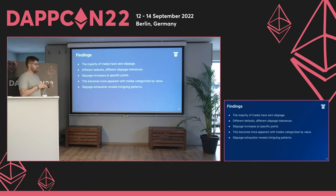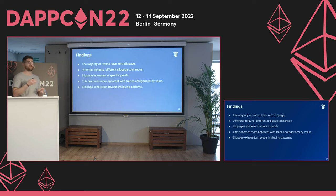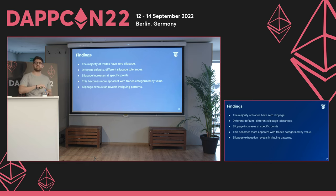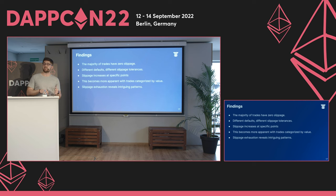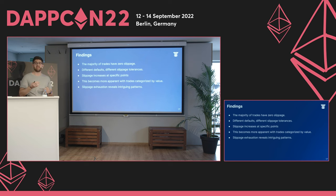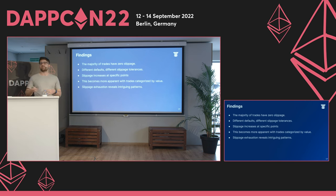To recap our most noteworthy findings: the majority of trades have zero slippage, but the remainder differs significantly from aggregator to aggregator. Different aggregators have different default slippage tolerance values, which impact the distribution of slippage. Slippage increases at specific negative round number points, which could indicate MEV attacks — this becomes even more apparent when trades are categorized by value. The MEV exhaustion parameter reveals an intriguing pattern shifting to 100%, and those trades should always be analyzed further.